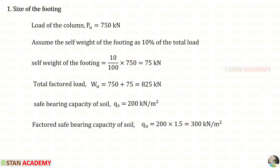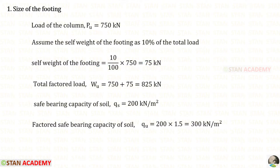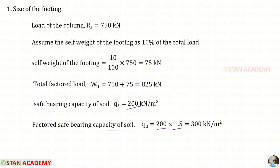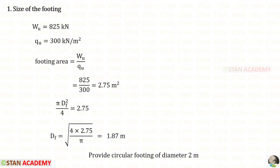The first step in the design is to find the size of the footing. We assume the self weight of the footing is 10 percent of the total load, giving 75 kilo newton. Adding to the factored load, the total factored load is 825 kilo newton. To find the factored safe bearing capacity of soil, we multiply QS by 1.5 to get 300 kilo newton per meter square.